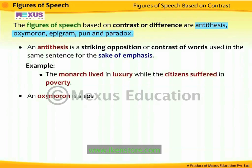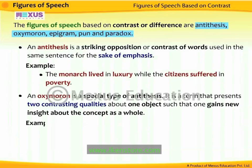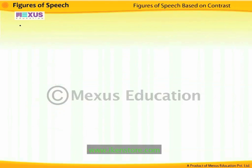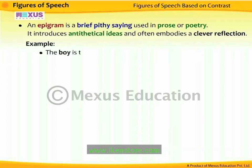An oxymoron is a special type of antithesis. It presents two contrasting qualities about one object such that one gains new insight about the concept as a whole. For example, 'he is the wisest fool yet' — the term 'wisest fool' is an oxymoron. An epigram is a brief, pithy saying used in prose or poetry. It introduces antithetical ideas and often embodies a clever reflection. For example, 'the boy is the father of science' — two antithetical ideas are introduced.